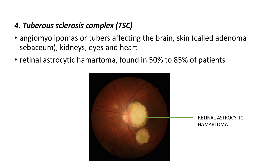Tuberous sclerosis complex, or TSC, involves angiomyolipomas and tubers affecting the brain, adenoma sebaceum, kidneys, eyes, and heart. Retinal astrocytoma is seen in this picture — this is a tumor growing on the optic nerve and is found in 50 to 85 percent of patients.